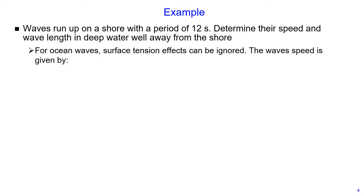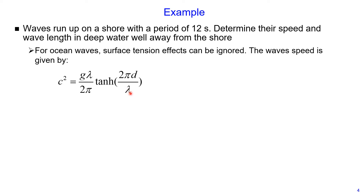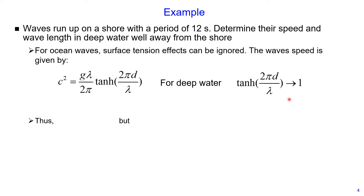We can determine the wave speed using the equation shown on this slide. The wave speed squared equals gravity multiplied by wavelength divided by 2π, multiplied by the hyperbolic tangent of the product of wave number and water depth, where 2π divided by λ is the wave number. But we know that for deep water, the hyperbolic tangent of this product is approximately equal to 1. Therefore, the wave speed squared equals gravity multiplied by wavelength divided by 2π.